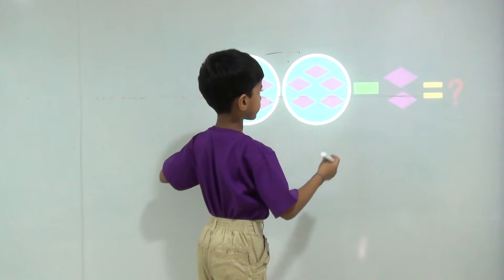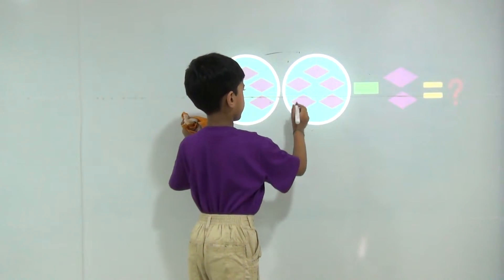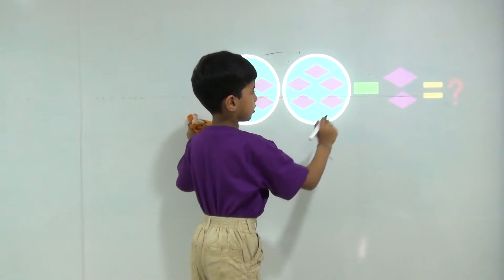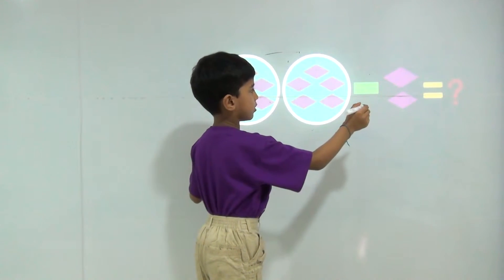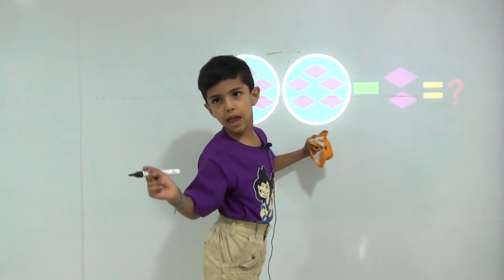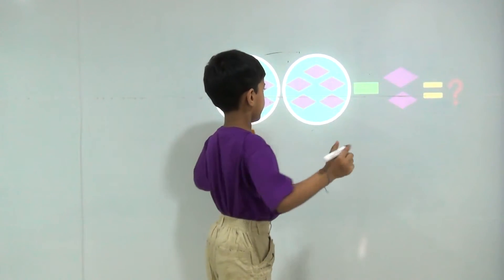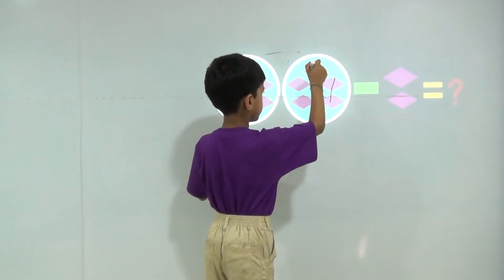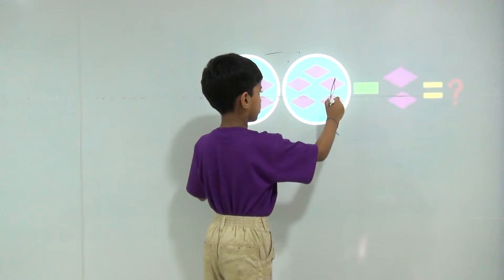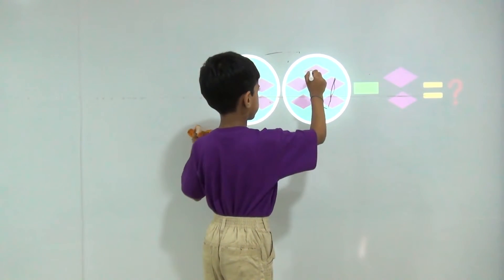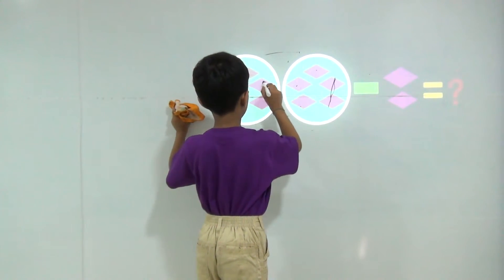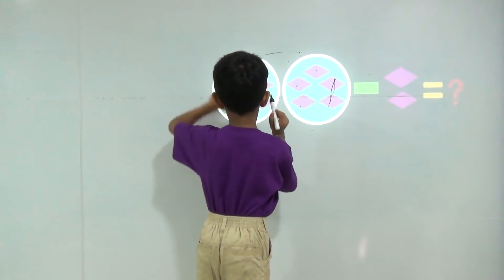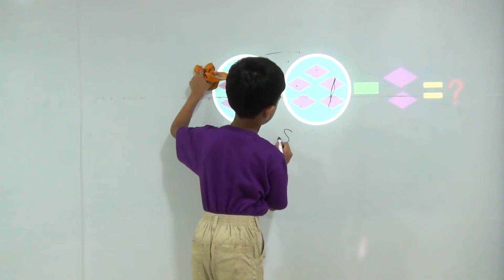I have 10 diamonds. My bhaiya takes 2 diamonds. So how many diamonds do I have? Let's count. 1, 2, 3, 4, 5, 6, 7, 8. So the answer will be 8.